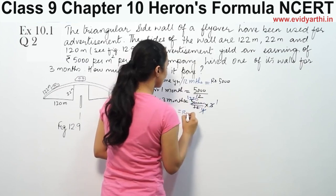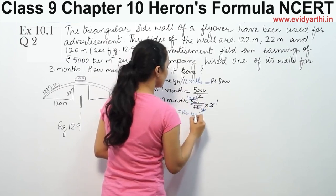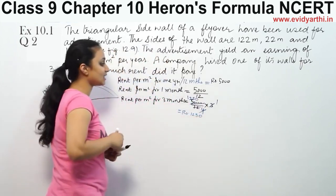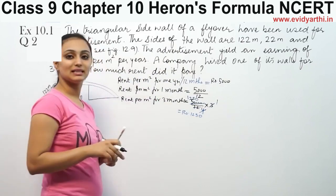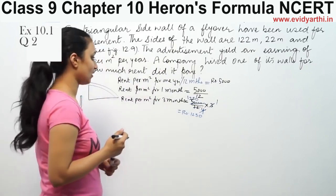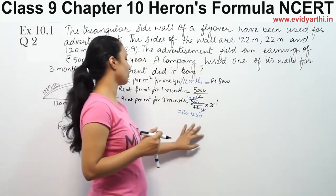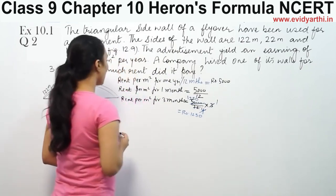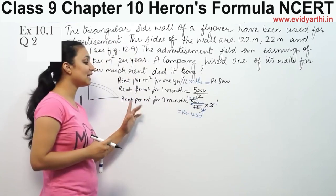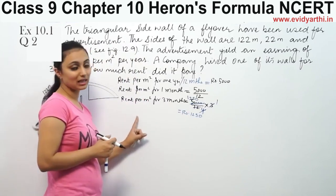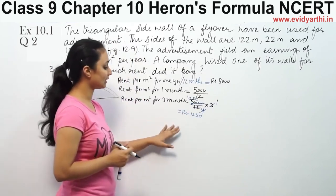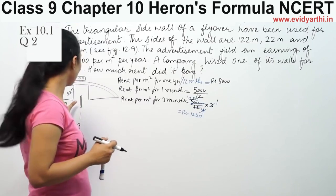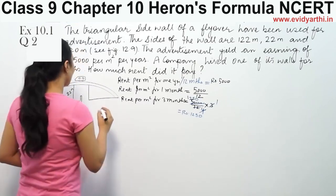This gives Rs. 1,250. So the rent for 3 months per meter square is Rs. 1,250. Now we have this rate, so we know that 1 m² for 3 months costs Rs. 1,250. So first we find the area of the triangular wall.